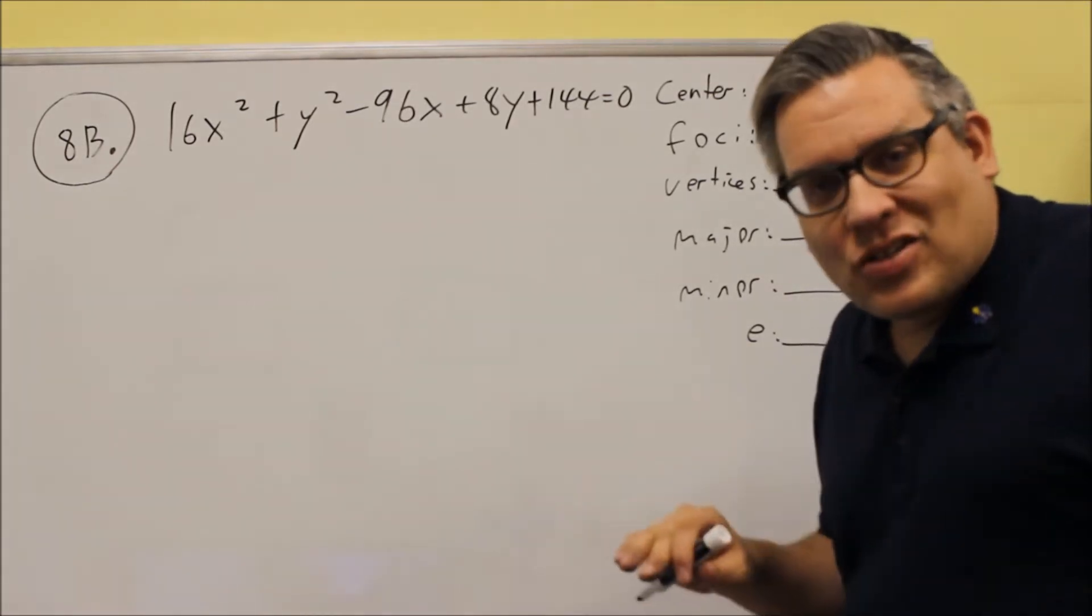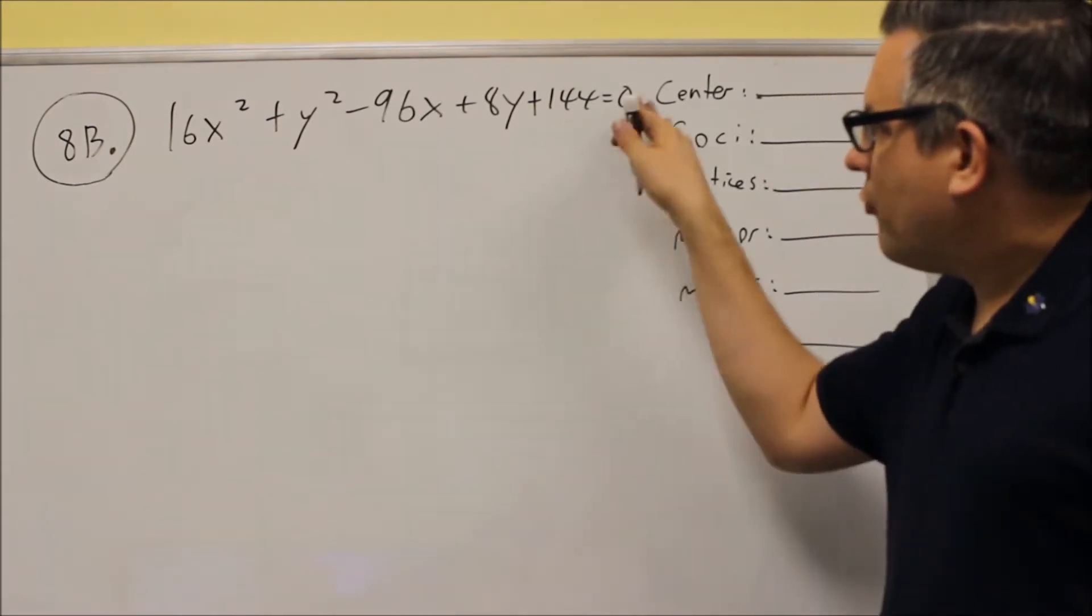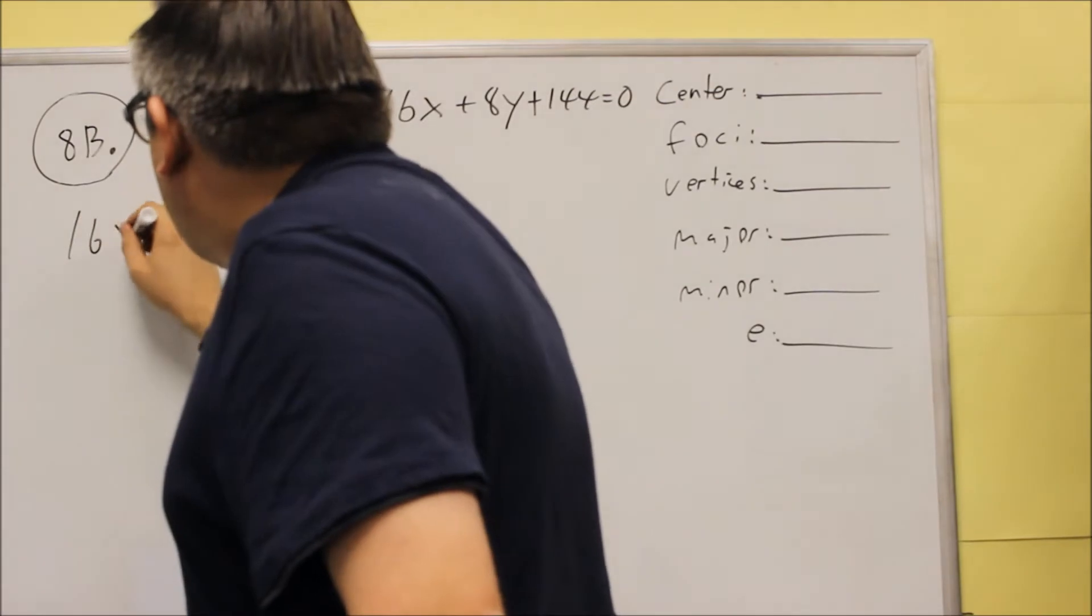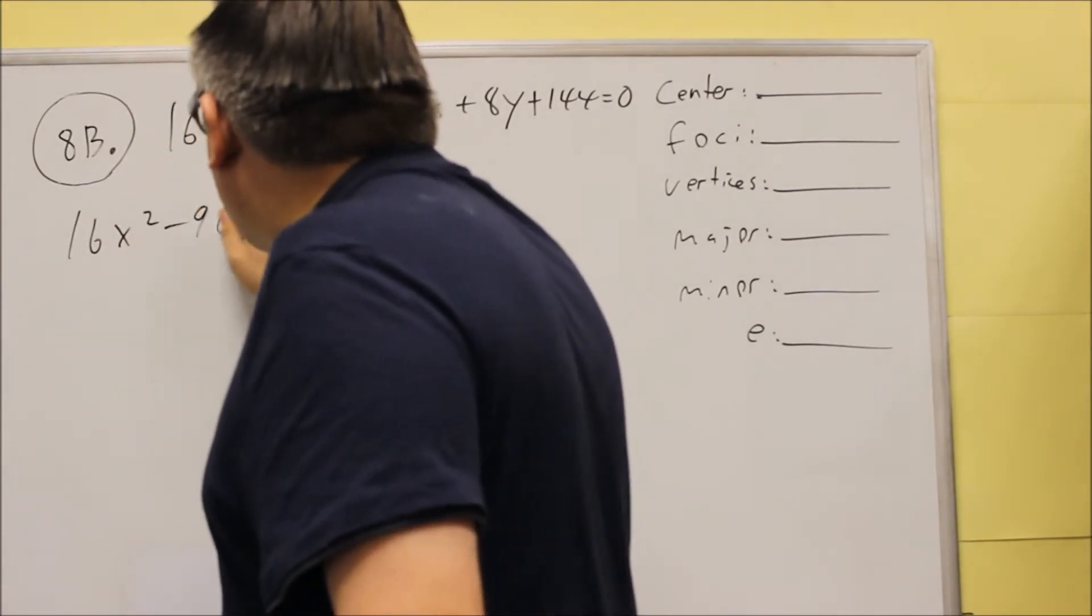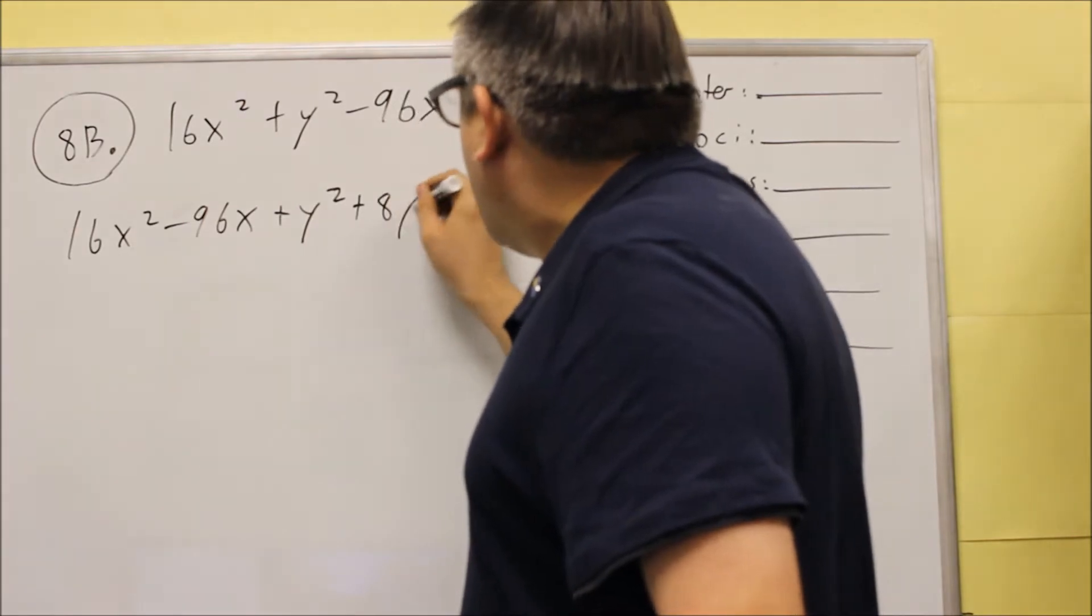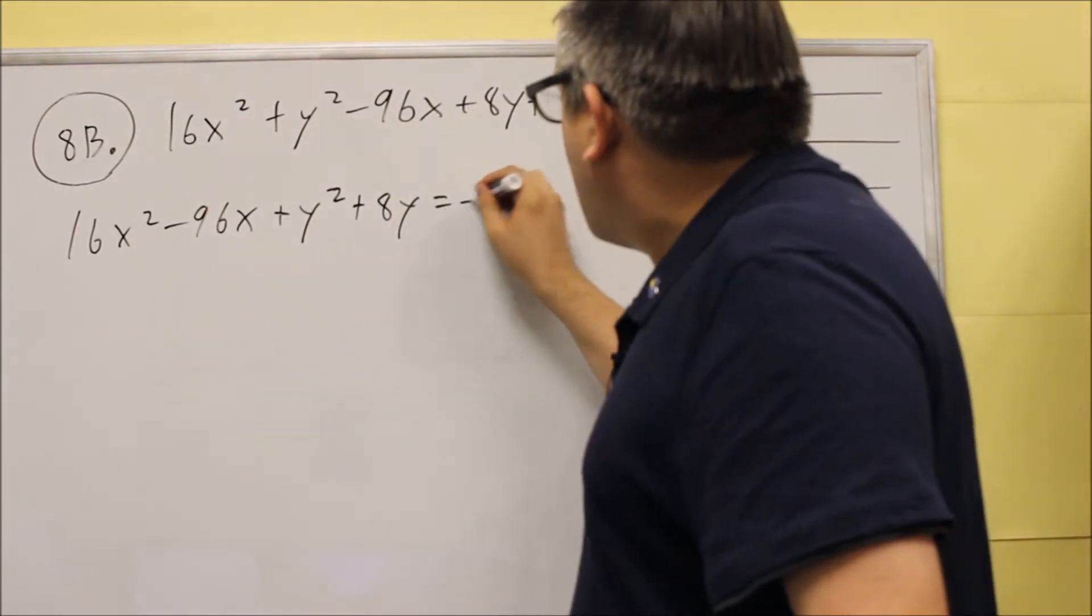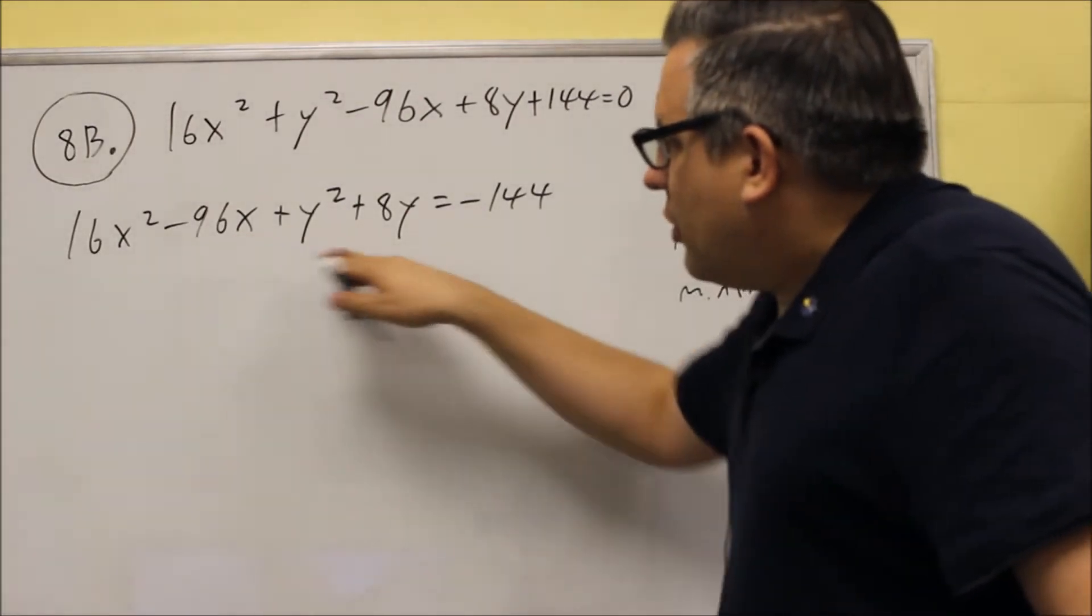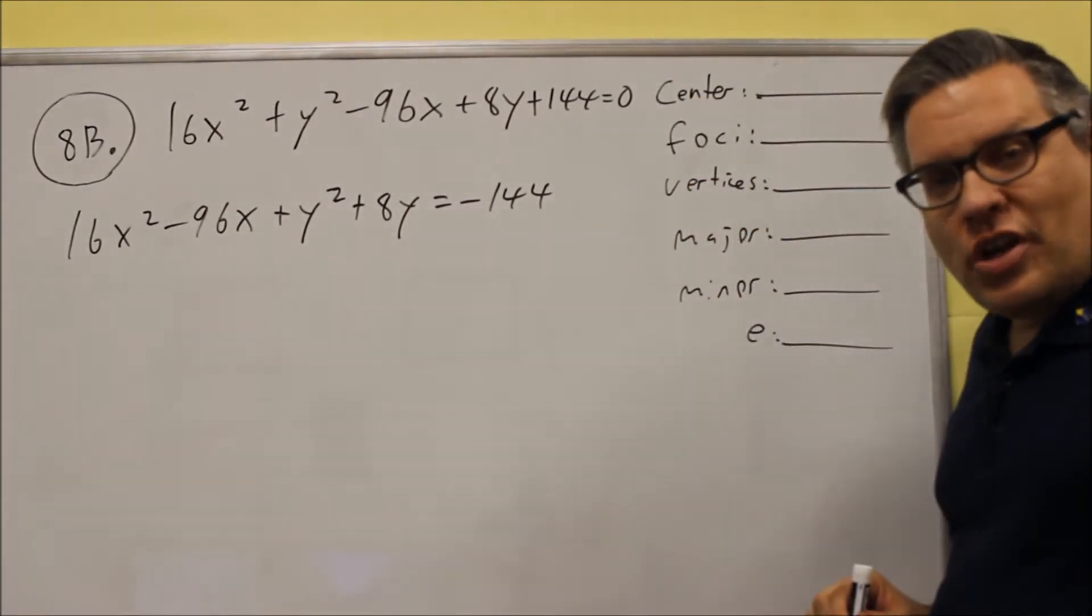First thing we want to do is group the X's and the Y's together and the 144 we're going to put on the other side of the equation. So we're going to put 16X squared, then we have minus 96X, plus Y squared plus 8Y equals negative 144. So we first do that by grouping the like variables together.